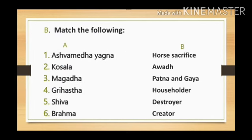Let us now discuss Exercise B: Match the following. Number 1 — Ashvamedha Yajna: it is a horse sacrifice. Number 2 — Kosala: which is present-day Awadh. Number 3 — Magadha: which is present-day Patna and Gaya.